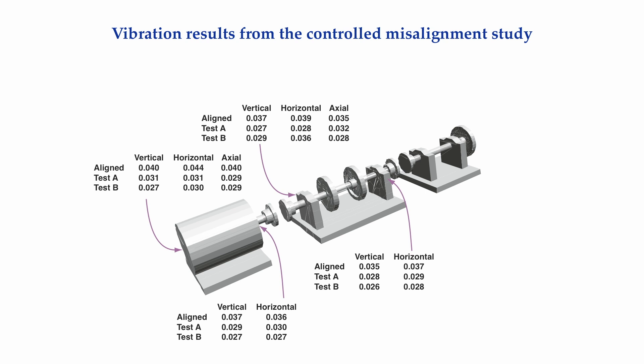On the center shaft at the bearing on the motor side, in the vertical direction from well aligned to Test B: 0.037, 0.027, 0.029. Notice that the overall vibration from Test A to Test B increased from 0.027 to 0.029, but it never got back to 0.037 when it was well aligned. In the horizontal direction, vibration went from 0.039 to 0.028 to 0.036. In the axial direction: 0.035, 0.032, 0.028. On the other bearing in the vertical direction: 0.035, 0.028, 0.026; and in the horizontal direction: 0.037, 0.029, 0.028.